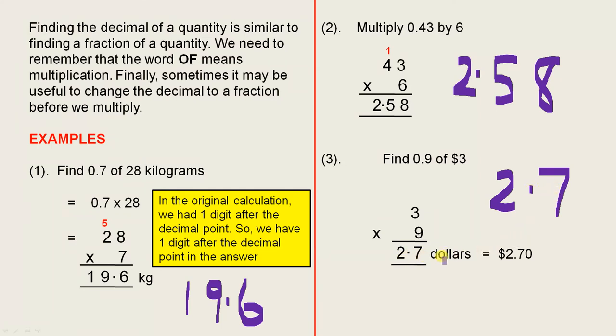So we have one digit after the decimal point in the answer. Now 2.7 dollars is really 2 dollars 70, so you can change it to that if you like, 2 dollars 70.